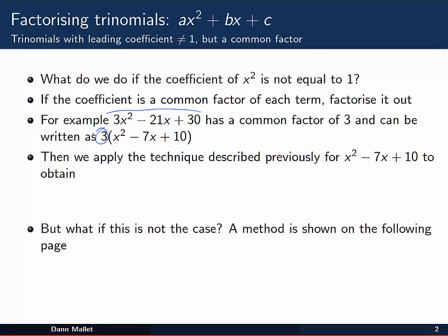And then go ahead and factorise x² - 7x + 10, which does have a leading coefficient of 1, in the usual way, to obtain (x - 2)(x - 5).